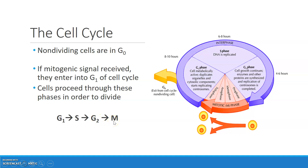The cell cycle progresses from G1 to S to G2 to M. In the process, one cell that starts in G1 is ultimately divided into two at the end of mitosis. We're going to talk more about the different phases of mitosis in the next part of the lecture.